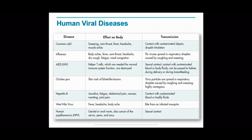Here we have some examples of human viral diseases. Firstly, we have the common cold. Its effects on the body include sneezing, sore throat, fever, headaches, and muscle aches. It gets transmitted through contact with contaminated objects or droplet inhalation. We also have AIDS, caused by HIV. It destroys the helper T cells, which are needed for normal immune system function. It gets transmitted through sexual contact, contact with contaminated blood or bodily fluids, and it can be passed to babies during delivery or breastfeeding.